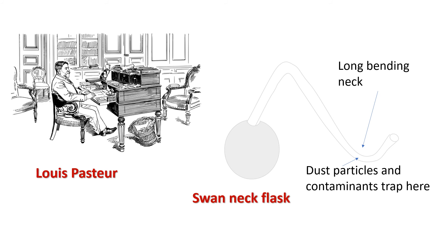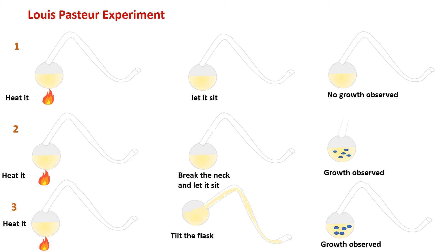In 1862, Louis Pasteur settled all disputes related to spontaneous generation theory. He took swan-neck flasks with long bending necks that trap dust particles and other contaminants before they reach the body of the flask. He ran three experiments in parallel. First, he heated a swan-neck flask containing broth and let it sit — no growth was observed after a few days, because contaminants settled in the curved neck and could not reach the broth. In the second experiment, after heating the flask he broke the neck, and after a few days growth was observed because contaminants could now reach the broth through the broken neck.